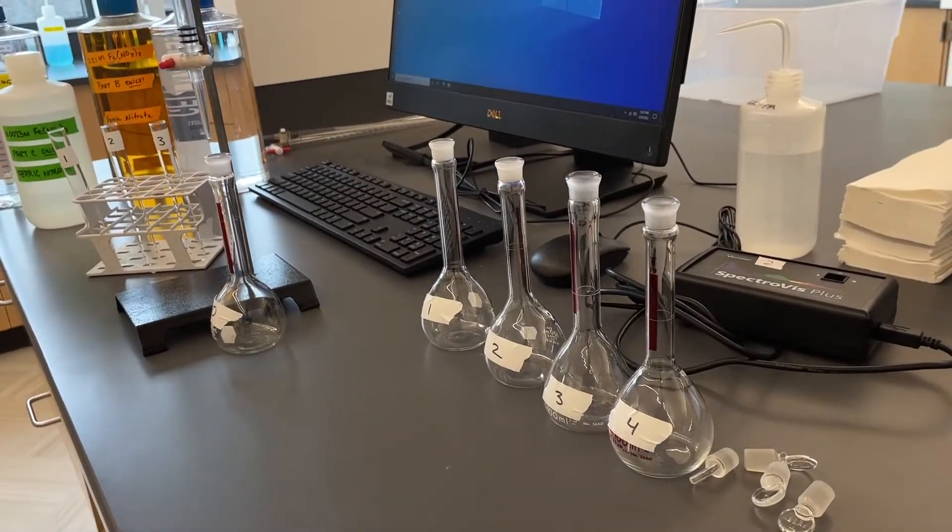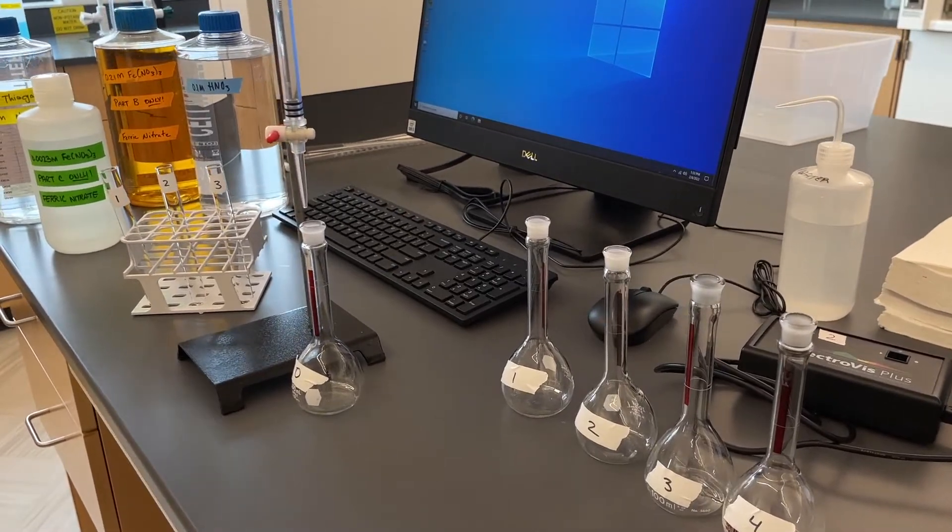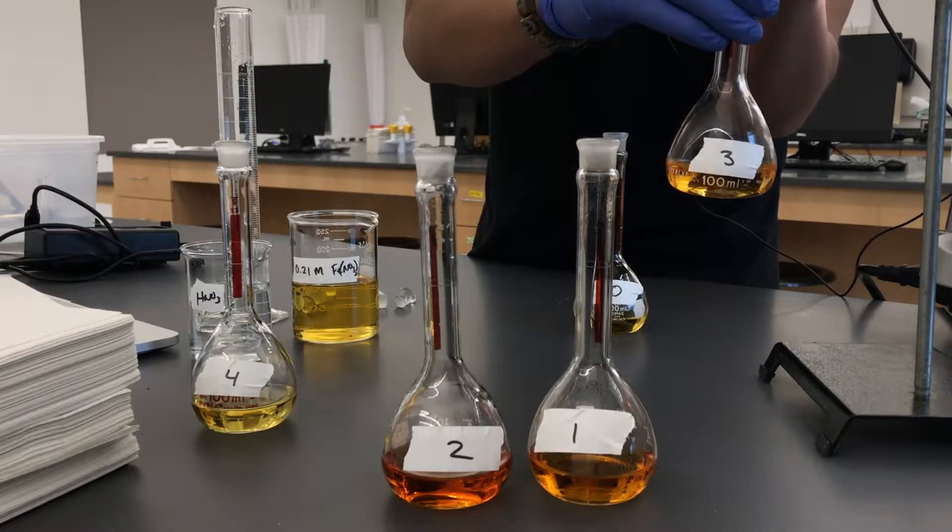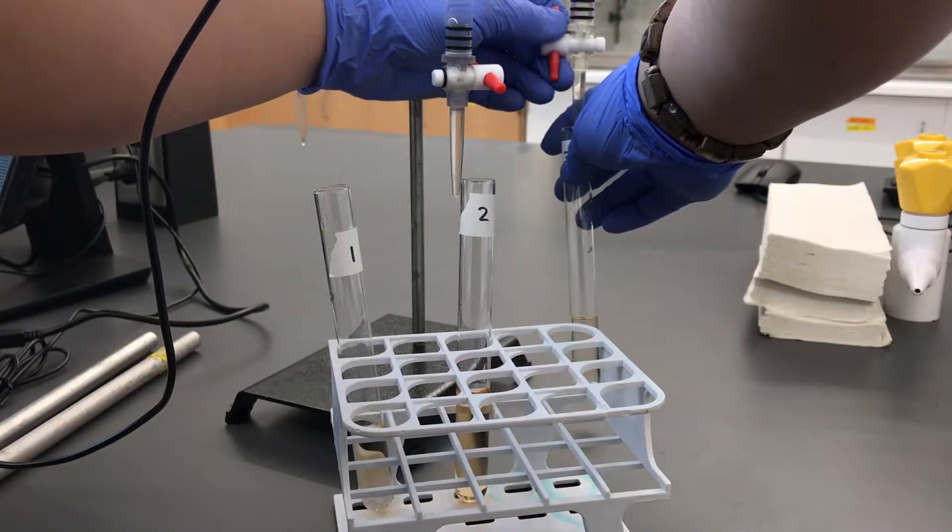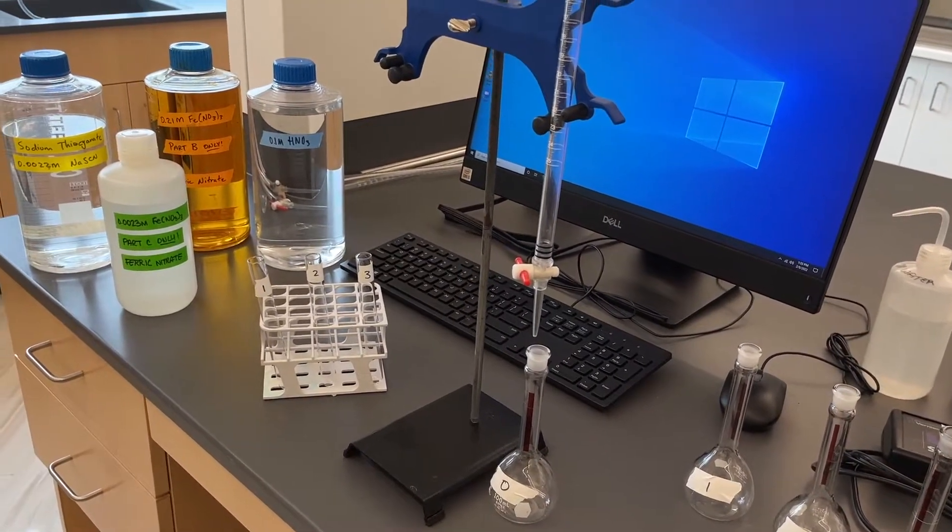In this laboratory demonstration, we'll see how to determine the equilibrium constant for an iron-3 complex reaction by making some standard solutions to create a Beer's Law plot and then identifying the concentration of the reagents that are needed to form the reaction at equilibrium. Let's get started.